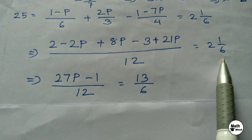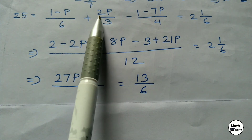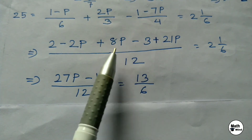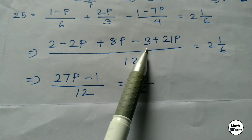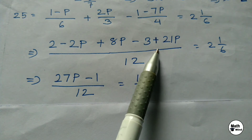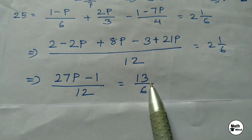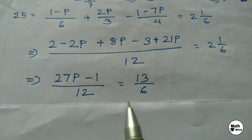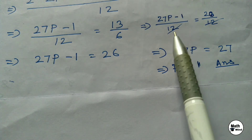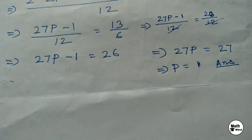Multiplying terms appropriately: one term multiplied by 2 gives 2−2P; another multiplied by 4 gives 8P; opening brackets with negative signs gives −3+21P. Numerator simplifies to 27P−1 over 12. Right-hand side is 13/6 = 26/12. The 12s cancel, leaving 27P−1 = 26. Solving gives P = 1. Option D is correct: P = 1.